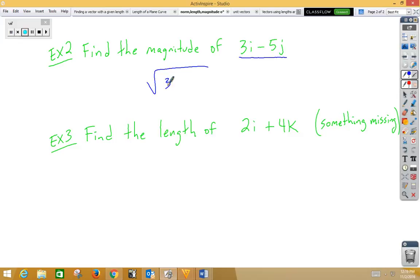So we're going to go three squared plus negative five squared, so nine plus twenty-five, square root that, and we get square root of thirty-four. And this time I'm going to call that the length of my vector.